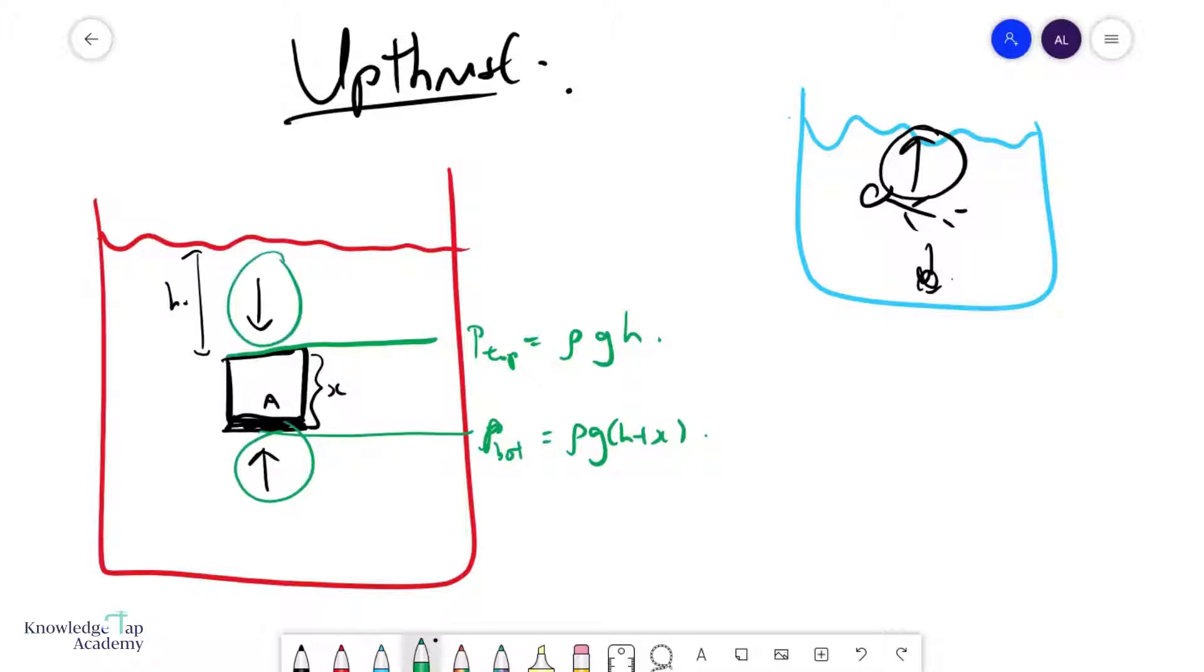And hence, you see the pressure at the bottom is always greater than the pressure at the top. And this creates some net pressure, P net, which is simply P bottom minus P top. And you'll find that this piece gives you ρGX. Now, that is the pressure difference.